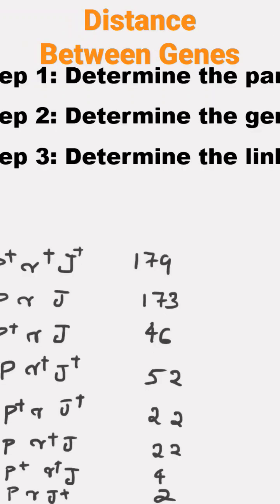So, normally in examination, they will not give the genes in correct order. They will give a table like this. From this table, first we have to find the correct order of the gene. After that, we have to calculate the distance between two genes.